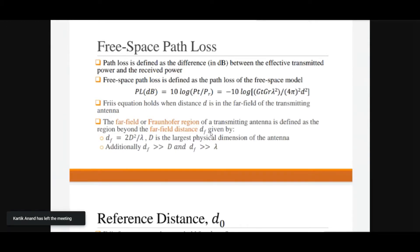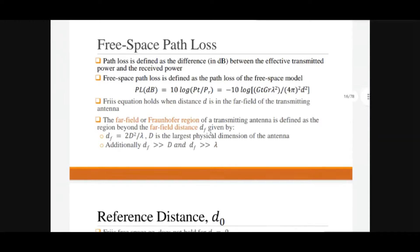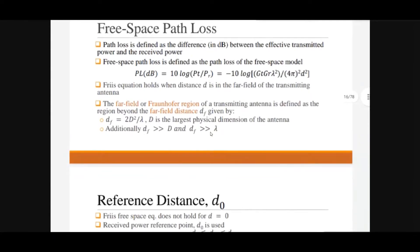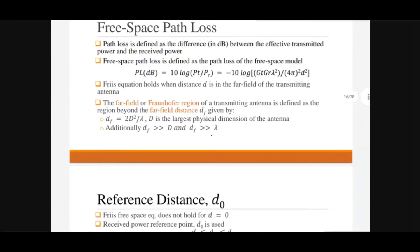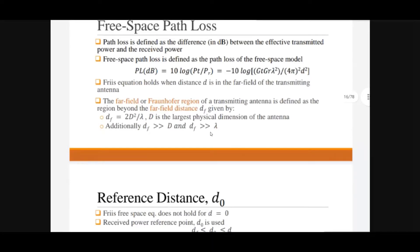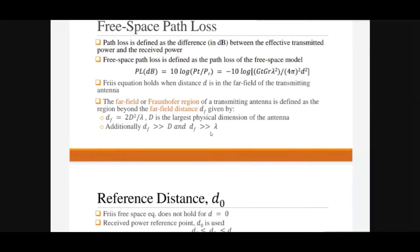The free space equation holds when distance d is in the far field of the transmitting antenna — meaning both antennas are very far from each other. For the far field, the far-field distance df is defined as the region beyond df = 2D² / λ, where D is the largest physical dimension of the antenna and λ is the wavelength.